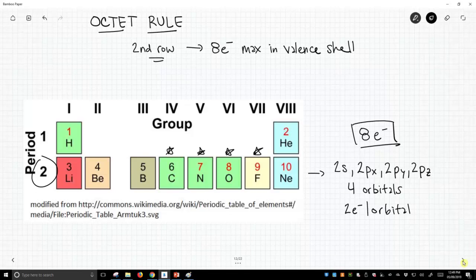Second row elements will not violate the octet rule. Sometimes you can have violations in the third row and lower rows, but of course there are other orbitals at work where they have things like d orbitals.